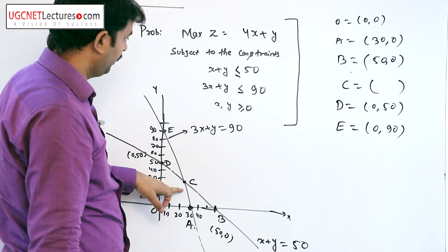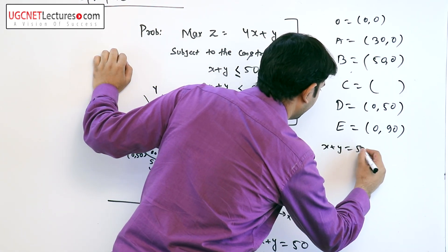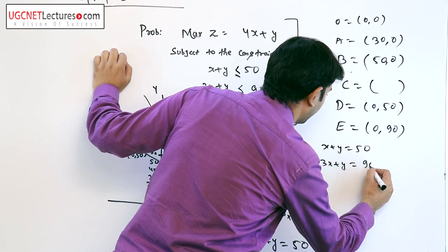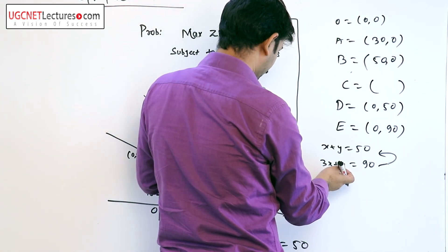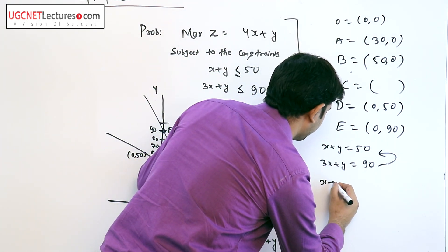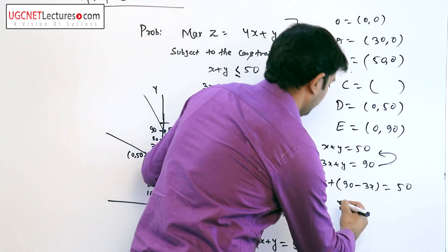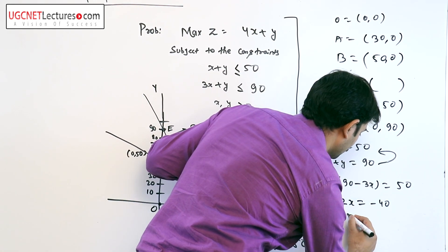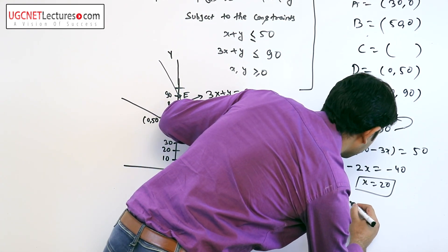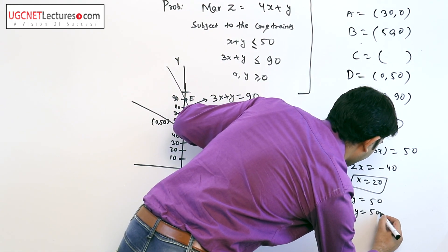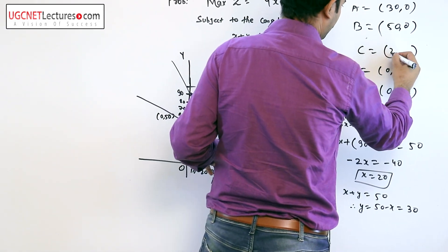To find the coordinate of point C, we solve the two equations simultaneously: x + y = 50 and 3x + y = 90. Substituting y = 90 − 3x into the first equation: x + (90 − 3x) = 50, which gives −2x = −40, so x = 20. Substituting x = 20 back: y = 50 − 20 = 30. Therefore, the coordinate of C is (20, 30).